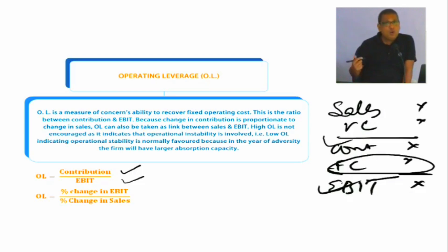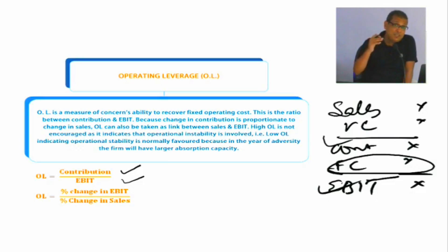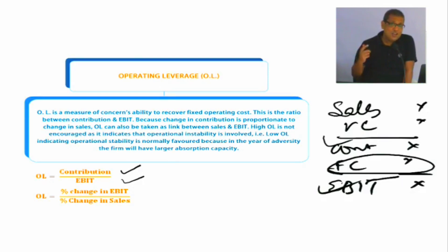बीच में देखे, इसके fixed cost है। अगर fixed cost आपका बहुत high है, तो EBIT will be very low and thereby your operating leverage will be very high. बहुत high operating leverage की problem क्या है? कि अगर आपके business में थोड़ा भी sale कम होता है, तो high operating leverage आपको problem create करने लग जाता है। तो high operating leverage का मतलब होता है operational instability.